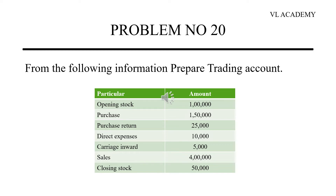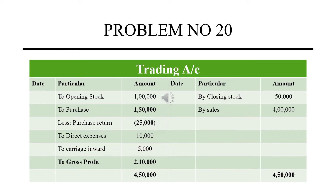Now, how do we apply this account? On the debit side, we have opening stock. Then purchases of 1,50,000, and from that we deduct the purchase return. You have to separate purchases of 1,50,000 and purchase return of 25,000, and calculate net purchases.